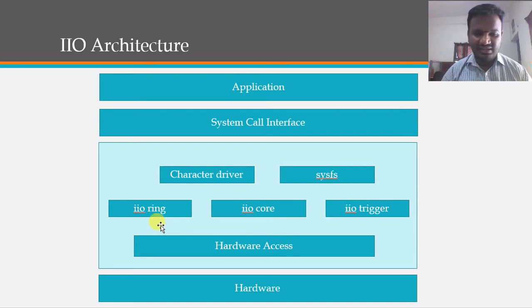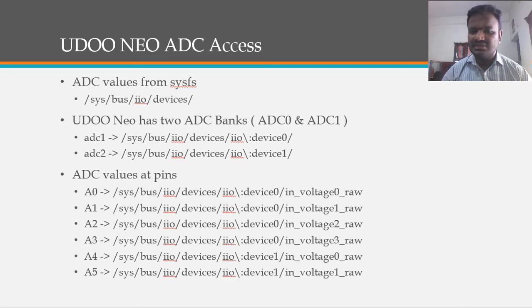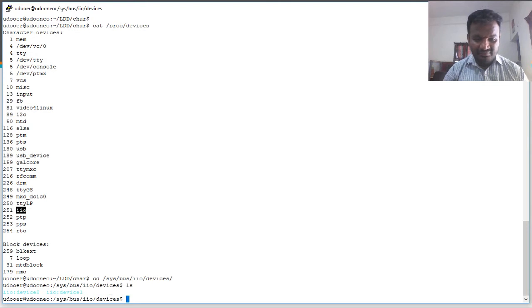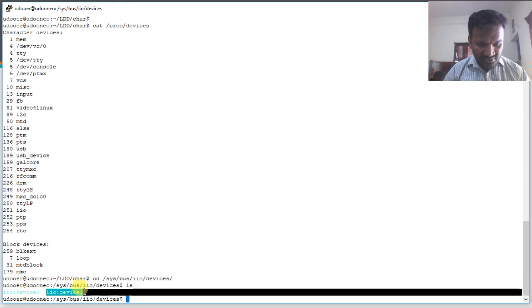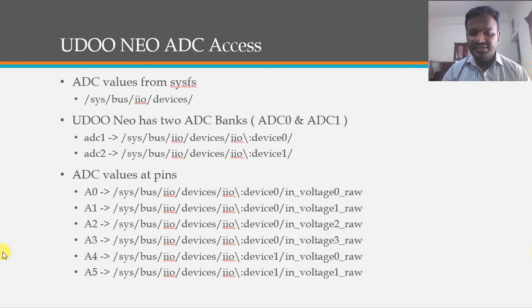On the Udoo Neo board, ADC devices are accessed via the sysfs path: /sys/bus/iio/devices/. The board has two ADCs, each with four channels. ADC 1 appears as iio:device0 and ADC 2 as iio:device1, both detected in the sysfs IIO device list.